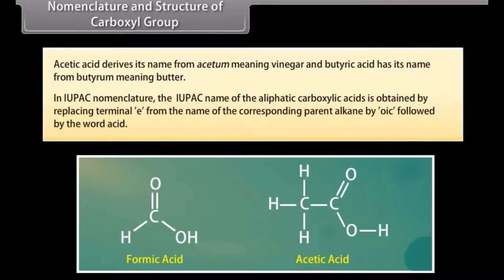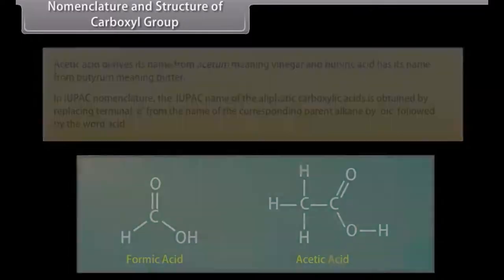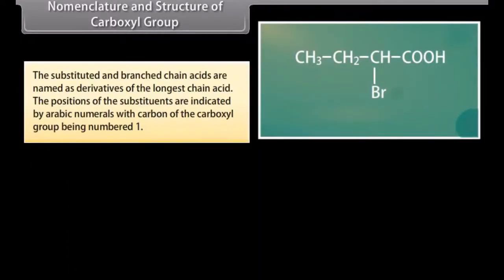In IUPAC nomenclature, the IUPAC name of the aliphatic carboxylic acids is obtained by replacing the terminal 'e' from the name of the corresponding parent alkane by 'oic acid'. The substituted and branched chain acids are named as derivatives of the longest chain acid. The positions of the substituents are indicated by Arabic numerals with the carbon of the carboxyl group being number one.